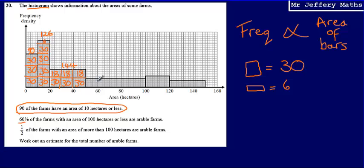For the next bar, the small boxes are made up of four strips. Four strips of 6 means each box is worth 24. There are five of them along the bar, so five 24s gives a frequency of 120. There are 120 farms with an area between 50 and 100 hectares.